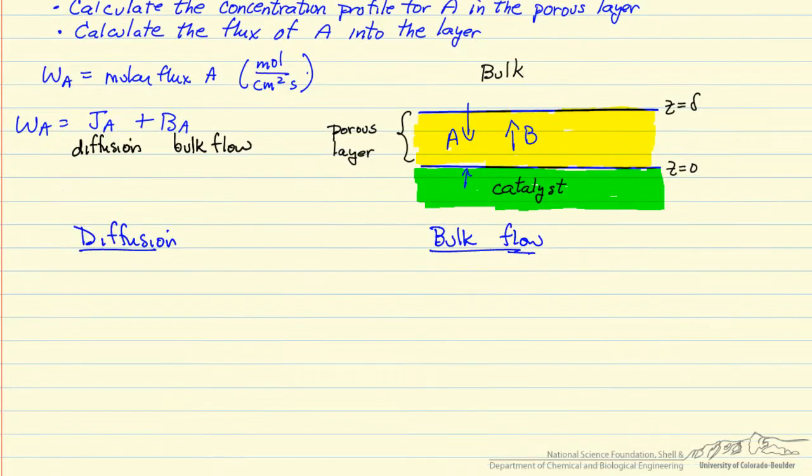So the diffusion term for component A is a diffusivity, and a change in the concentration of A with respect to Z, and the minus sign is here because the diffusion is from high concentration to low concentration. And this is just Fick's law.